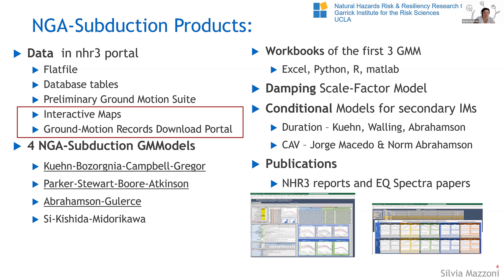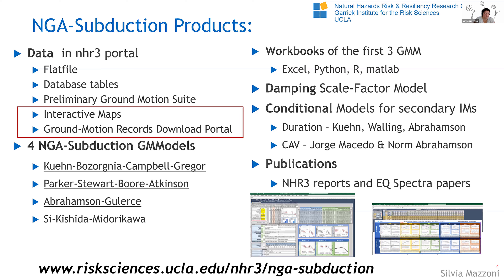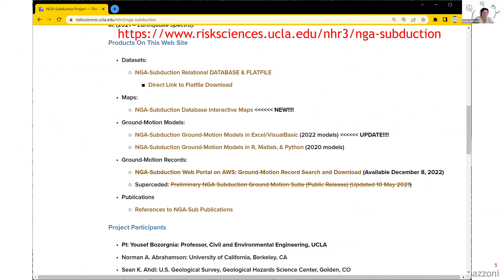Most importantly, there are a lot of publications. I highly recommend that you look at the publications before you start using these tools, so that you understand which ground motion models apply to what cases, and what the datasets are about. Everything is explained in the reports, and the tools developed are based on what is documented. Today I'm going to focus on just two items: the interactive maps and the download portal. You can find all this at www.risksciences.ucla.edu/NHR3/NGA-subduction, or just Google 'UCLA NGA subduction.'